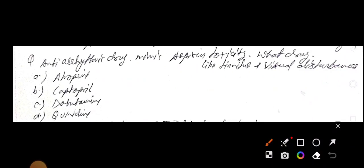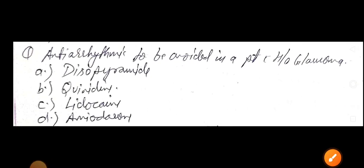Anti-arrhythmic drug mimic aspirin toxicity. What drug like tinnitus and visual disturbances produces? So guys, about aspirin poisoning MCQs, I already deliver on my channel. You can write aspirin poisoning MCQ by Dr. Heman Sharma on YouTube. You find. There I explain. So which drug mimic aspirin toxicity? Atropine, captopril, dobutamine, quinidine. Answer is quinidine. Quinidine mimics aspirin poisoning toxicity.